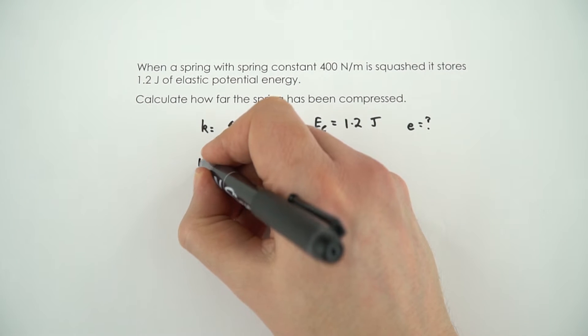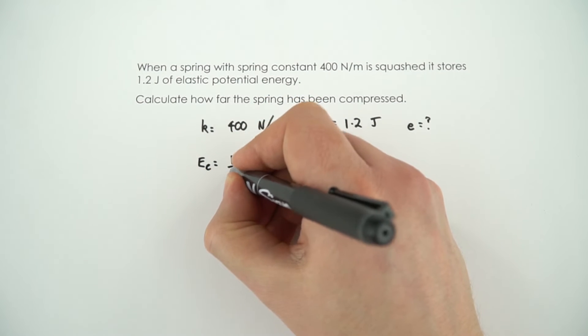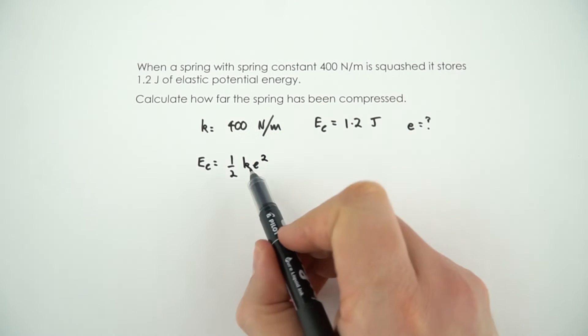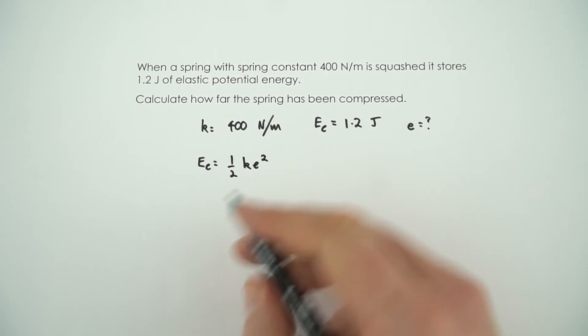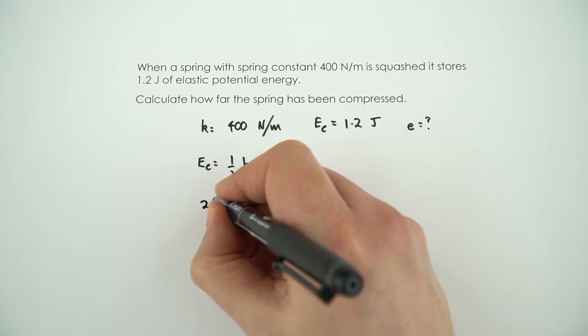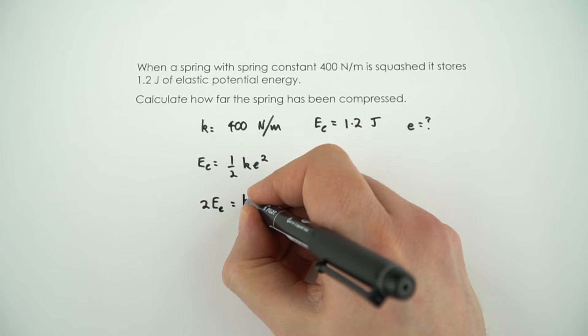So I'm going to write down the equation that EE is equal to a half KE squared, and we need to make this a subject so I'm going to rearrange it. So I'm going to say that 2EE is equal to KE squared.